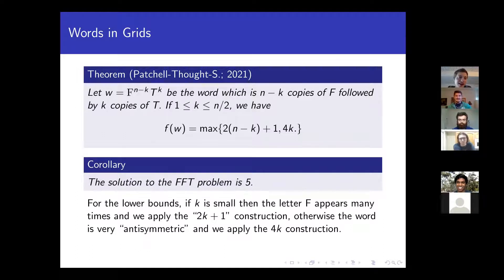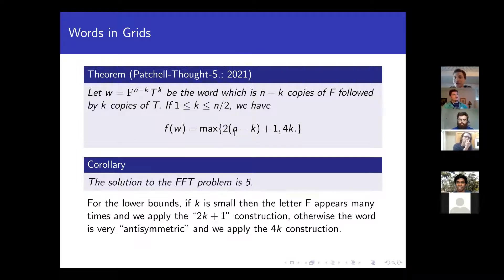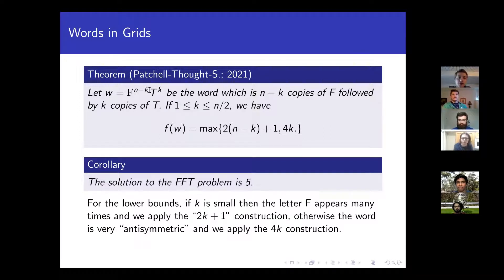Let me talk about the proof. The lower bound we've already done. If K is very small, then almost every letter is F, so F is a very popular letter, and the 2K+1 popular letter construction ends up giving 2(N-K)+1. If K is very big, then roughly the word looks like a bunch of F's followed by a bunch of T's — this is an anti-symmetric looking word — so when K is very large, it's better to use the 4K anti-symmetric construction. Surprisingly, these two relatively simple ideas completely give the right answer for this family.